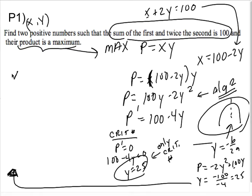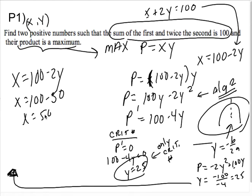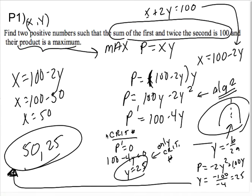And then to find X, you know that X is 100 - 2Y. So X is 100 - 50, X is 50. So my two numbers are 50 and 25. And again, you could find this using the second derivative test as well. If you did use P'', P'' is just -4, which means that P is concave down. You're definitely looking at a max.